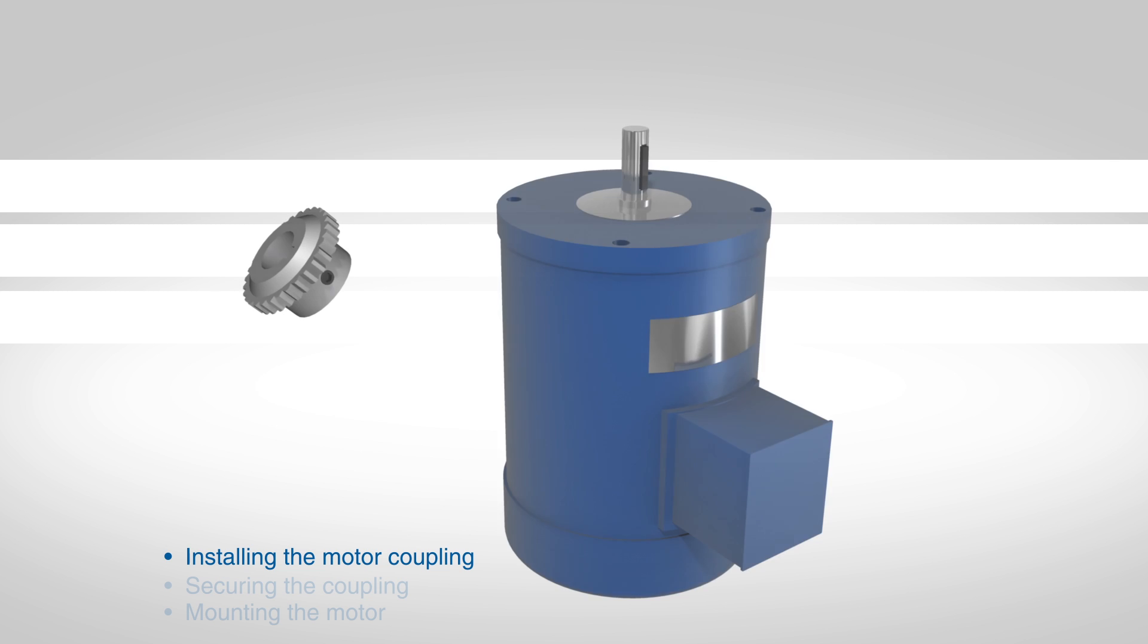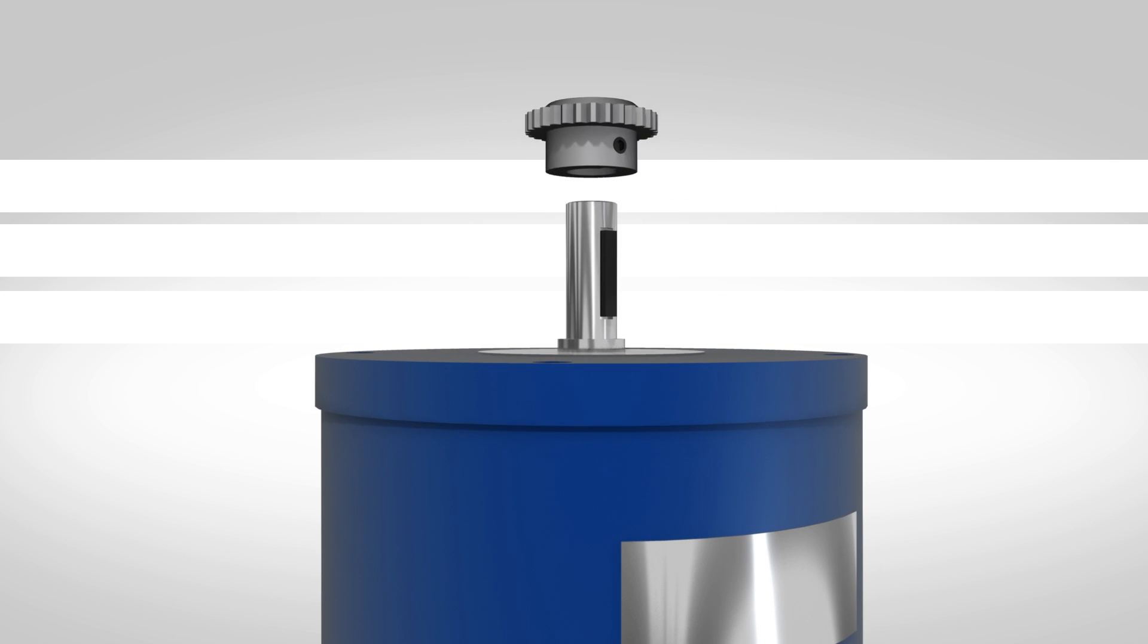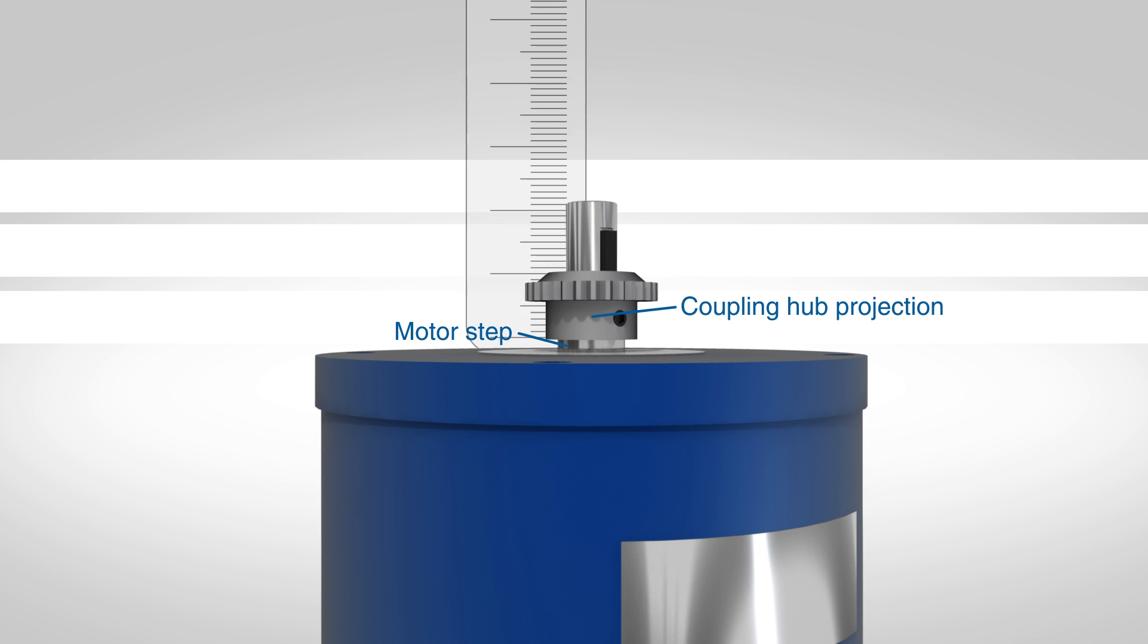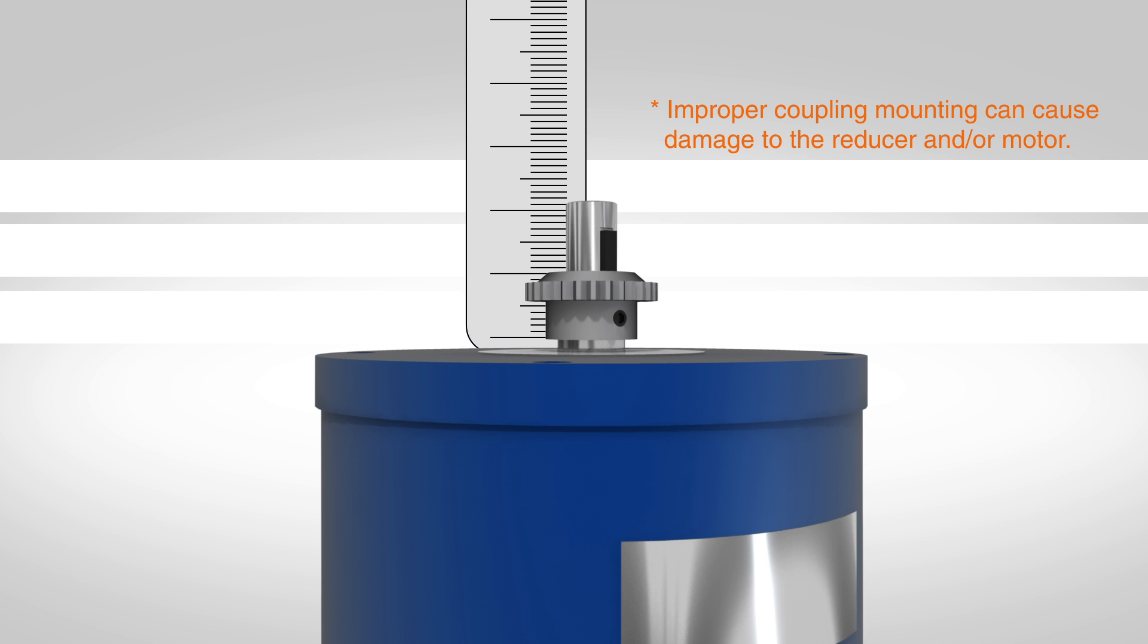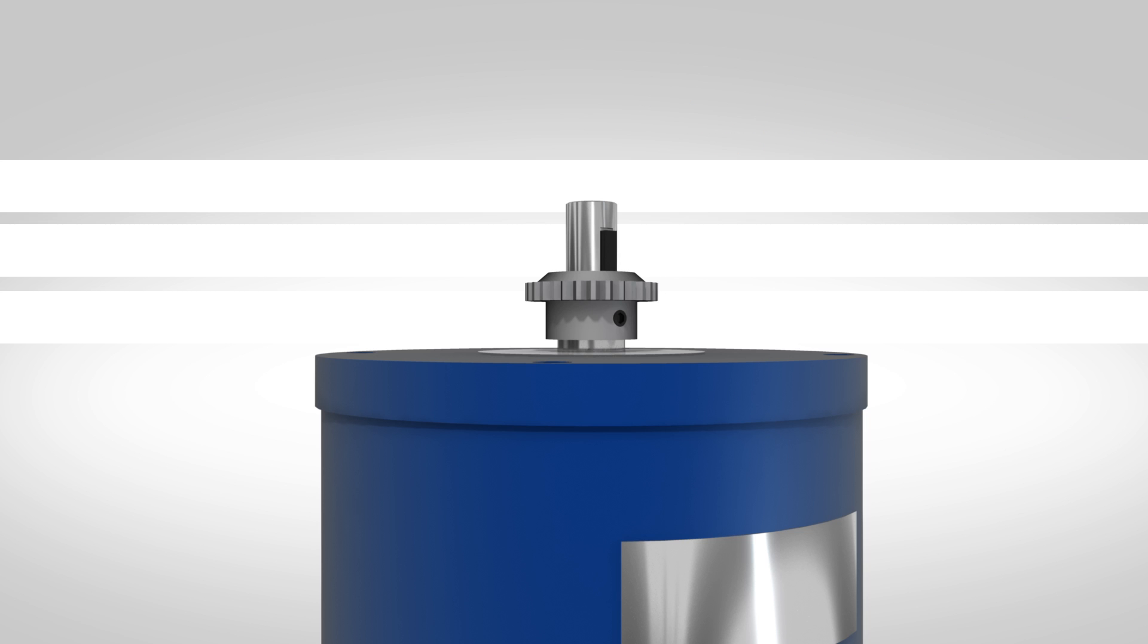Slide the motor coupling onto the shaft to ensure it is the correct size. Mount the coupling with the hub projection toward the step, or shoulder, of the motor. The coupling must be located correctly on the shaft. Failure to correctly locate the coupling on the motor shaft may cause thrust loads, which can cause premature failure of either the motor bearings or motor adapter bearings.